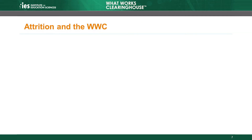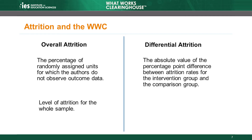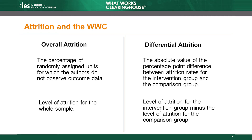The WWC focuses on two different types of attrition: overall and differential. Overall attrition is the percentage of randomly assigned units for which the researchers do not observe outcome data. You can think of overall attrition as the level of attrition for the whole sample. For example, the overall attrition rate would be 25% if 75% of all sample members remained in the study. But sometimes studies have more attrition in one group than in the other. Differential attrition is the absolute value of the percentage point difference between attrition rates for the intervention group and the comparison group.